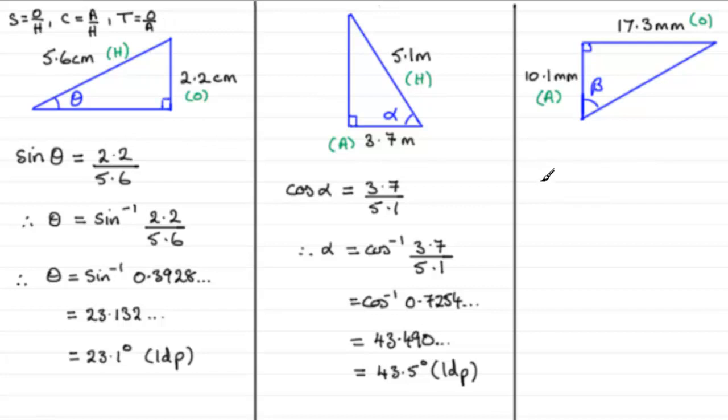Tangent compares the opposite to the adjacent side. So we've got, in this case, the tan of angle beta equals the opposite side, 17.3 divided by the adjacent side, 10.1. So to get beta, beta is going to equal the inverse tan of 17.3 divided by 10.1.